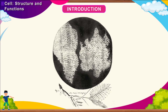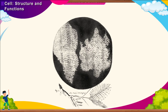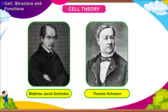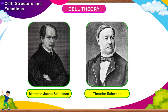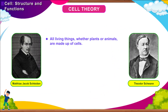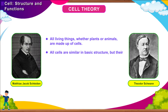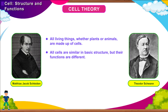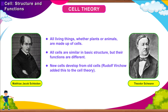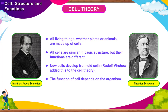The term cell reminded him of small rooms. Cell Theory: The cell theory was put forward by two German scientists, Matthias Jacob Schleiden and Theodor Schwann in 1839. According to this theory, all living things, whether plants or animals, are made up of cells. All cells are similar in basic structure but their functions are different. New cells develop from old cells. Rudolf Virchow added this to the cell theory.